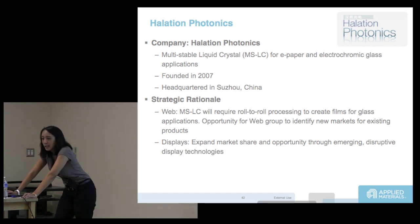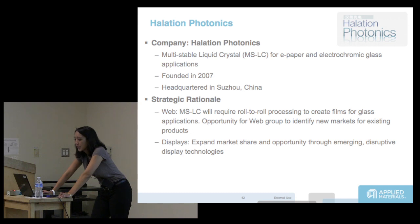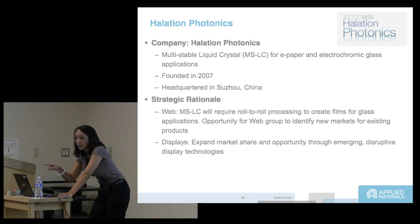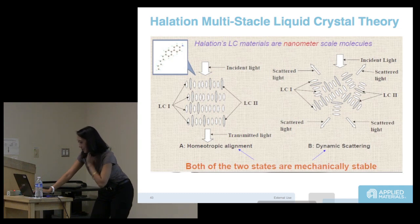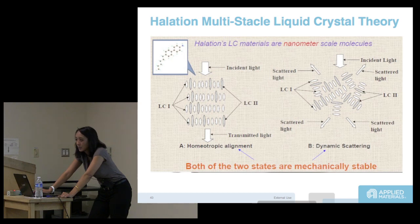Why did we invest? We make equipment that deposits ITO, and the surface morphology of the ITO actually matters for this company's technology — so that's where the strategic investment ties back to us. In terms of how it works: light comes through with a homeotropic alignment. When you apply a different kind of voltage, the light scatters and you don't see it. Both states are mechanically stable — that's what makes it bistable. You switch it and it stays in that state; you don't have to continuously pulse the liquid crystal.